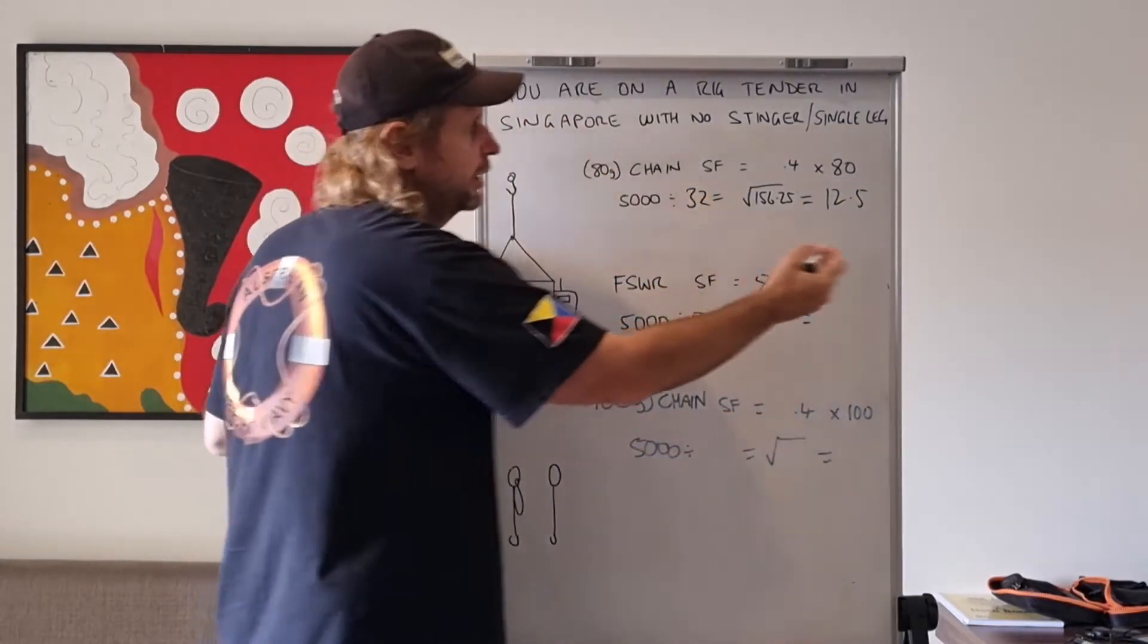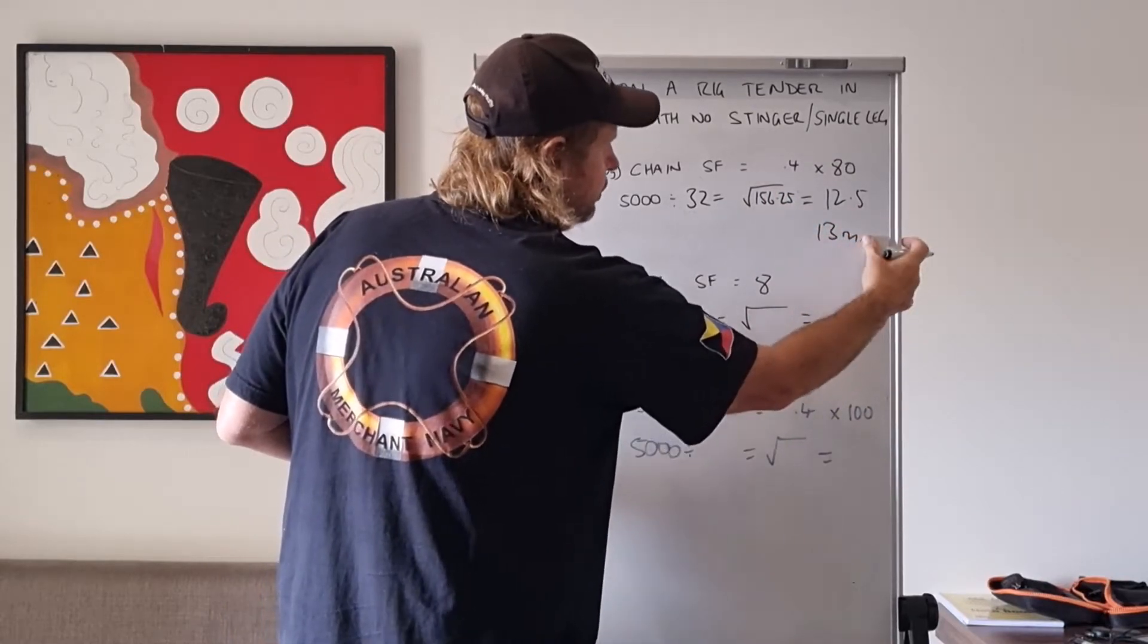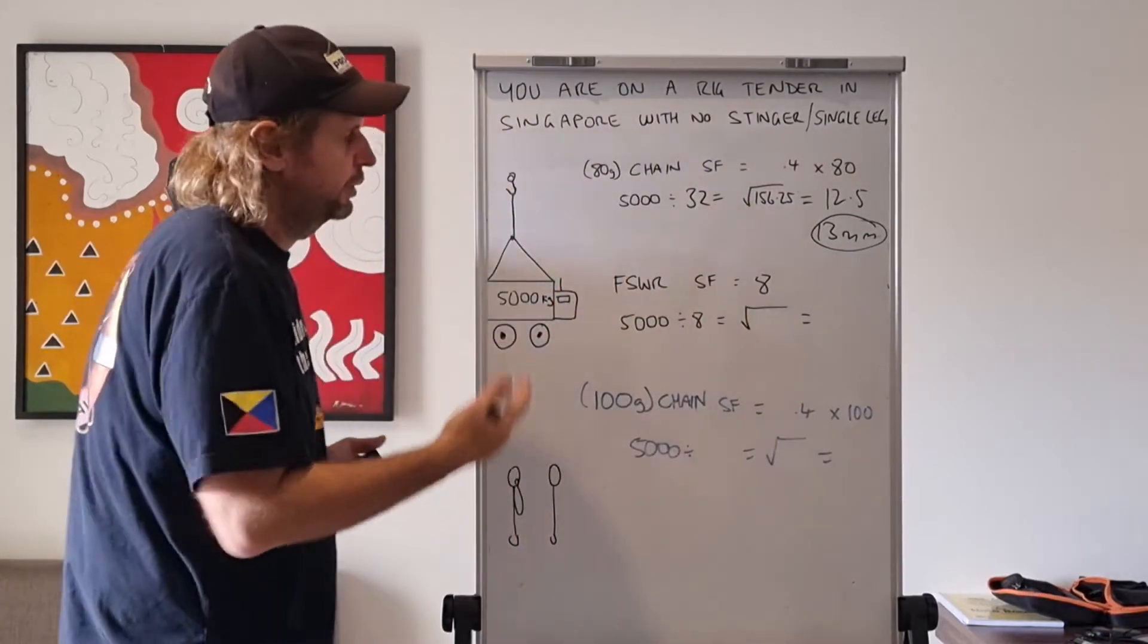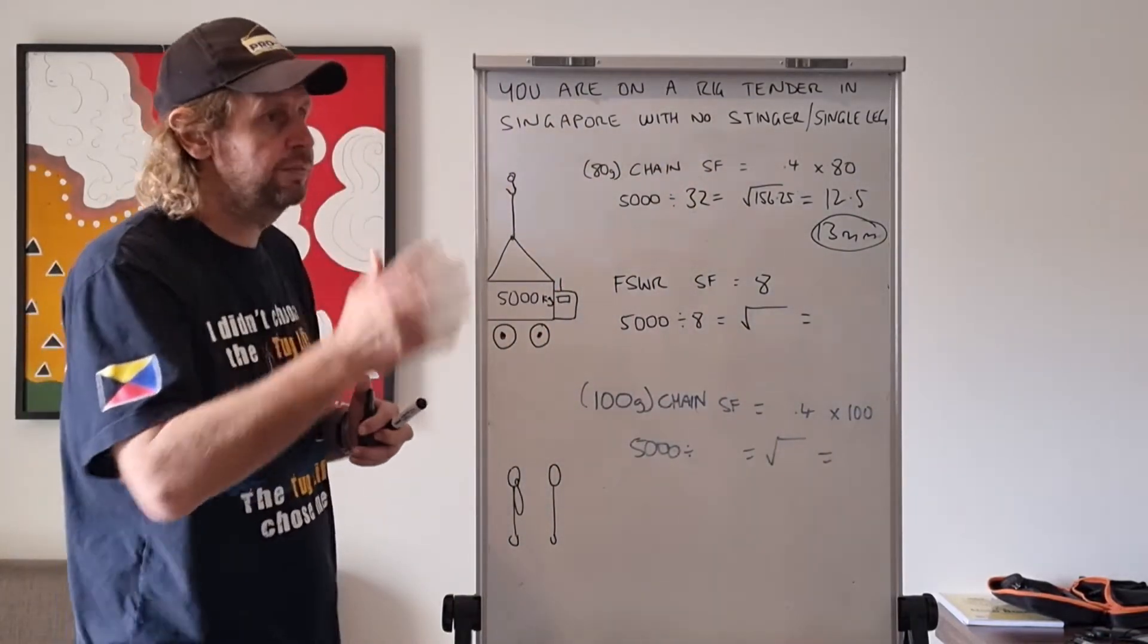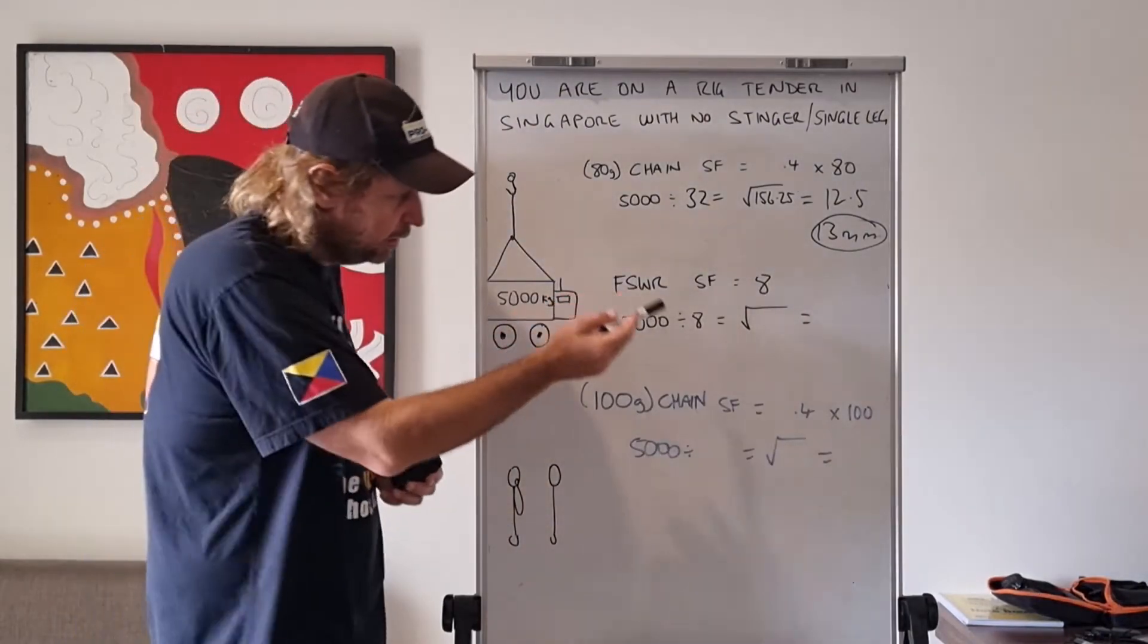12.5 millimeter chain - it doesn't really exist unless you have it specially made, so we'll round that up to 13 millimeter chain. We'll give them another option though. We're going to ask them, hey, have you got some chain or some slings? So they don't keep running back and forth to their bosun store.